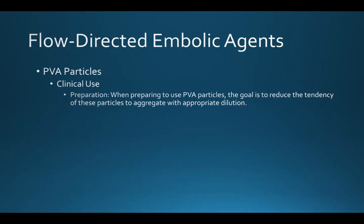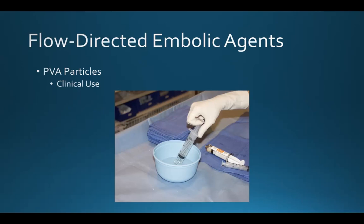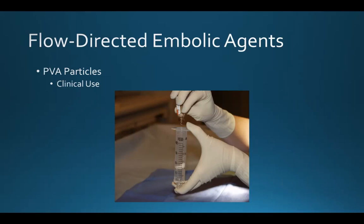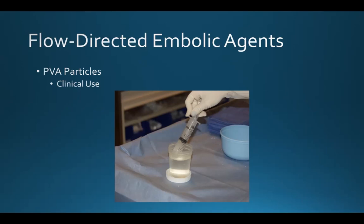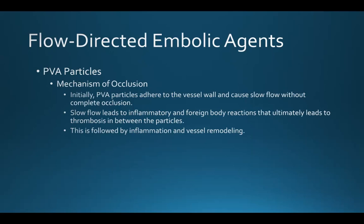In our lab, we typically prepare PVA with a 20 ml syringe. We draw up about 10 cc's of normal saline, remove the plunger, pour in the particulate PVA, replace the plunger, then draw up an equivalent amount of contrast — usually creating a 20 cc solution with one vial of PVA suspended within it. When initially injected into the vessel, PVA adheres to the vessel wall and causes slow flow without complete occlusion. Slow flow leads to inflammatory and foreign body reactions that ultimately cause clot to form between the particles, followed by an inflammatory reaction and vessel remodeling.